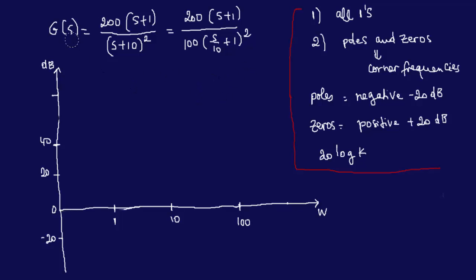So we cancel 200 and 100. Now we have a constant. We have 2(s + 1) / (s/10 + 1)². So poles are at the bottom and zeros are at the top. Poles represent a negative 20 dB slope, and zeros represent a positive 20 dB slope. And we have to find the constant gain.